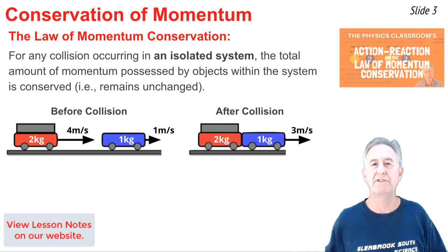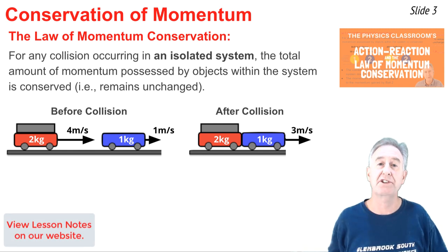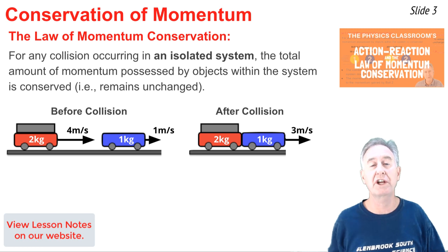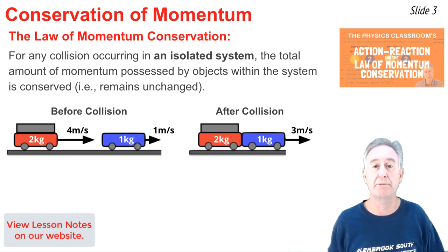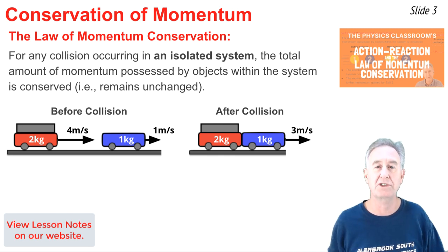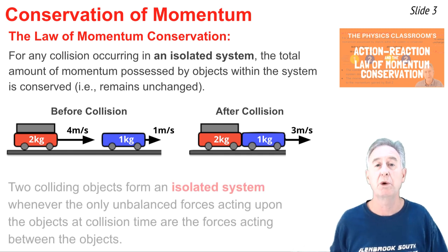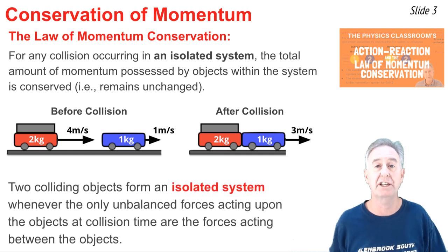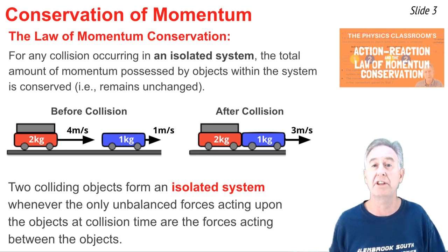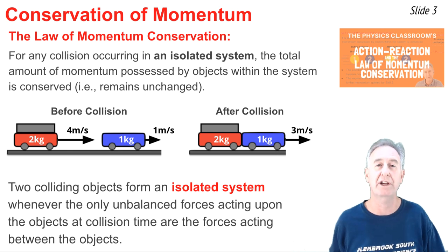In a previous video, I discussed the law of momentum conservation, which states that for any collision occurring in an isolated system, the total amount of momentum possessed by objects within that system is conserved, or remains unchanged. For the collision depicted here in the before-after diagram, we could consider this to be an isolated system as long as the only unbalanced forces acting upon the objects at collision time are the forces between the objects themselves.